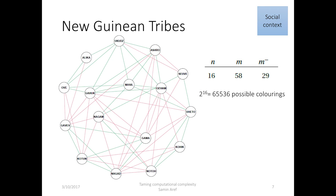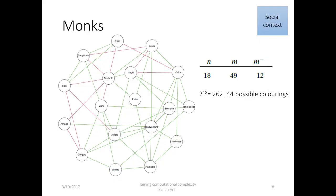Let's see some real examples. Here is a network of New Guinean tribes and their positive and negative relationships. The green and red edges represent alliances and enmities between these tribes. In here we have 16 nodes, therefore there are 2 to the 16 possible cases that need to be checked by the computer. Here is another network representing a group of monks and their positive and negative relationships. In here we have 18 nodes, therefore there are 2 to the 18 possible cases. So when we increase the number of nodes by 2, the number of cases to be checked will be increased by 200,000. This phenomenon is what we call computational complexity.